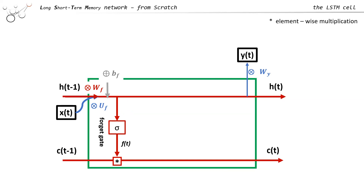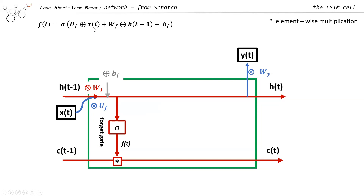That's why we use the term Ft and the indices F for W, U, and B. You could also call it the memory or remember gate — because if the value is one, we keep the information — but commonly it's called the forget gate. The equation: we multiply UF with Xt, WF with Ht-1, add the bias, and pass it to the sigmoid to get the forget gate value Ft.